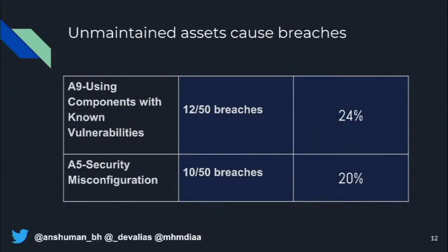This data from last year shows that almost 50% of the total number of breaches were because of assets people didn't know they had. The OWASP A9 standard — using components with known vulnerabilities — applies here: if you don't know what assets you have, how are you going to protect against known vulnerabilities?